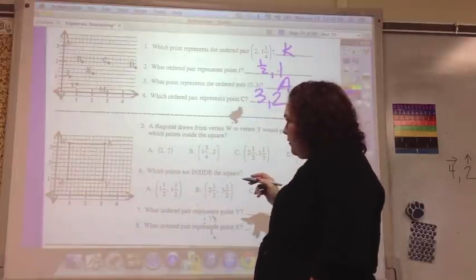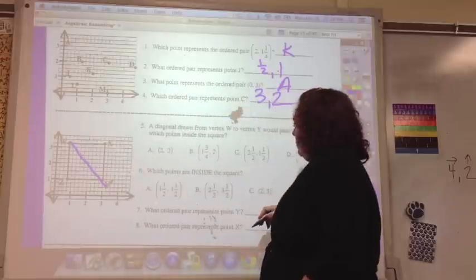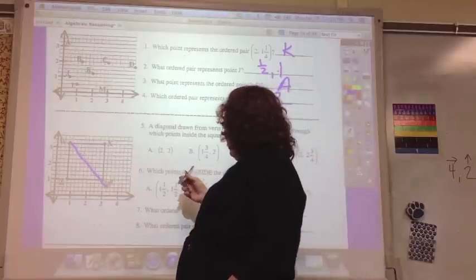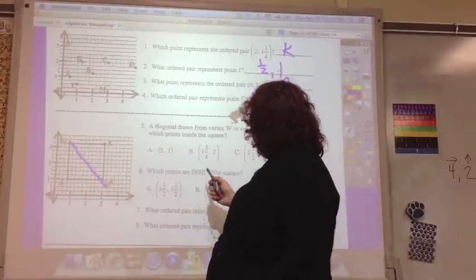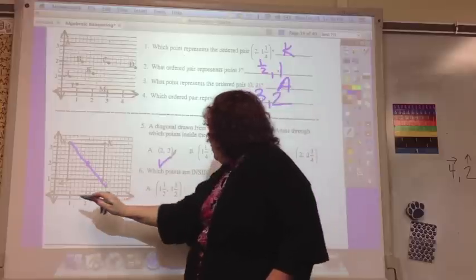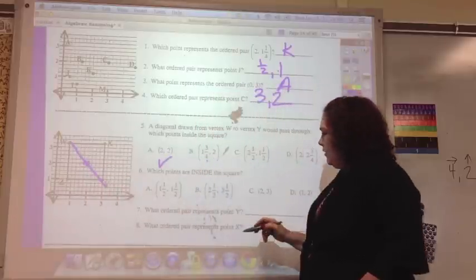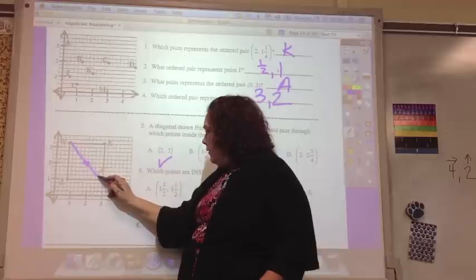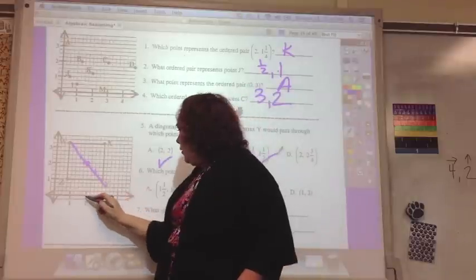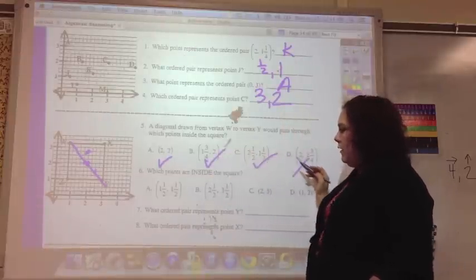And then it says draw a diagonal from W to Y. And which points are inside the square. Pass through which points inside the square. And 2, 2 would be there. And then 1.75, 2 would be really close. 2.5, 1.5 would be right there. And 2, 2.75, 2 is way off. So, these three would and this wouldn't.